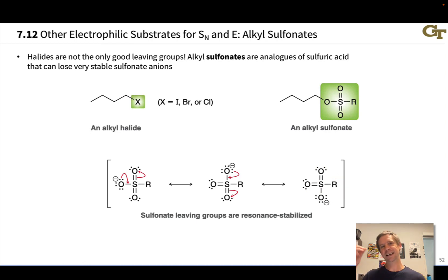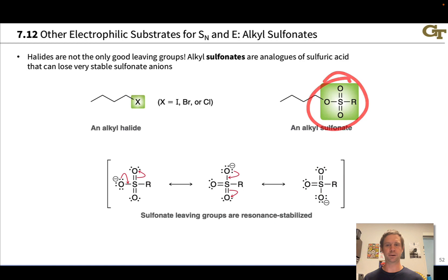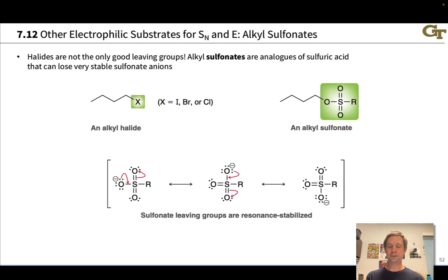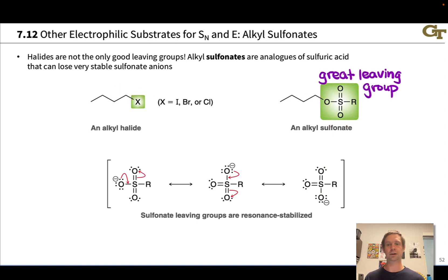When that sulfonate anion links up with a cationic carbon, we get an alkylsulfonate, where we have the sulfonate group and an alkyl group — an electrophilic carbon — connected to the singly bonded oxygen of the sulfonate group. Because this anion is so stable, these are analogous to alkyl halides, which also contain a group that forms a stable anion: iodine, bromine, or chlorine. Alkylsulfonates react like alkyl halides, particularly at the electrophilic carbon directly connected to the good leaving group.